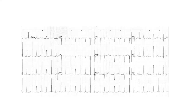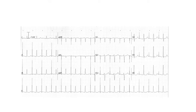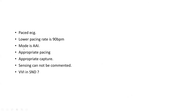This is another ECG from a patient showing pacing spikes — this is a paced ECG. The pacing spikes are making P waves, so atrial pacing is appropriate and it's making P waves. The lower rate is 300, 150, 100 — around 90 beats per minute. Importantly, if there is no native rhythm — no native P or QRS — you cannot comment on sensing. How to write this ECG: this is a paced ECG, lower pacing rate is 90 beats per minute, mode is AAI because it's capturing the atrium, there is appropriate pacing, appropriate capture, and sensing cannot be commented because there is no native P wave seen.